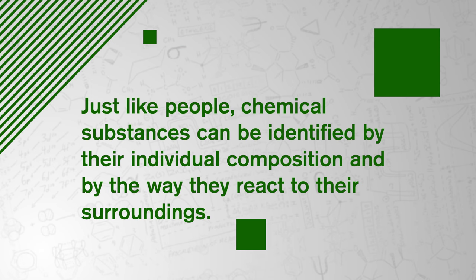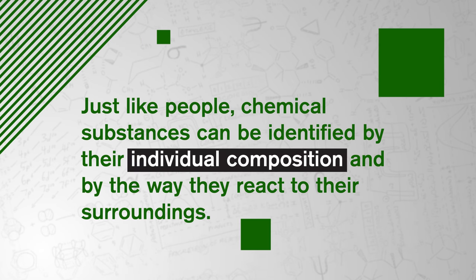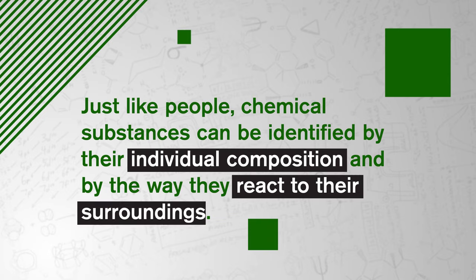Just like people, chemical substances can be identified by their individual composition and by the way they react to their surroundings. They have distinct and important relationships with each other, and like all of us, when put in certain situations, they are capable of radical change. Today, we'll discuss the physical and chemical changes substances can undergo, as well as how to recognize which of those changes has taken place.